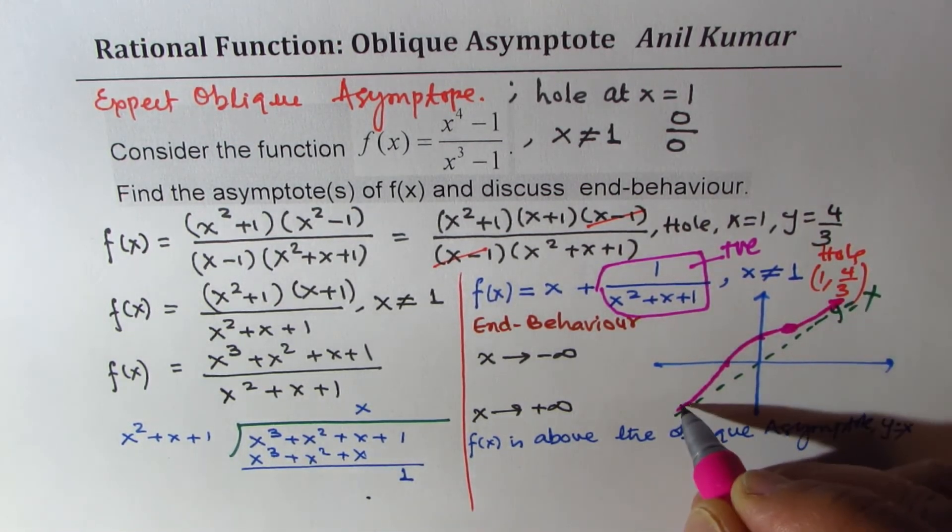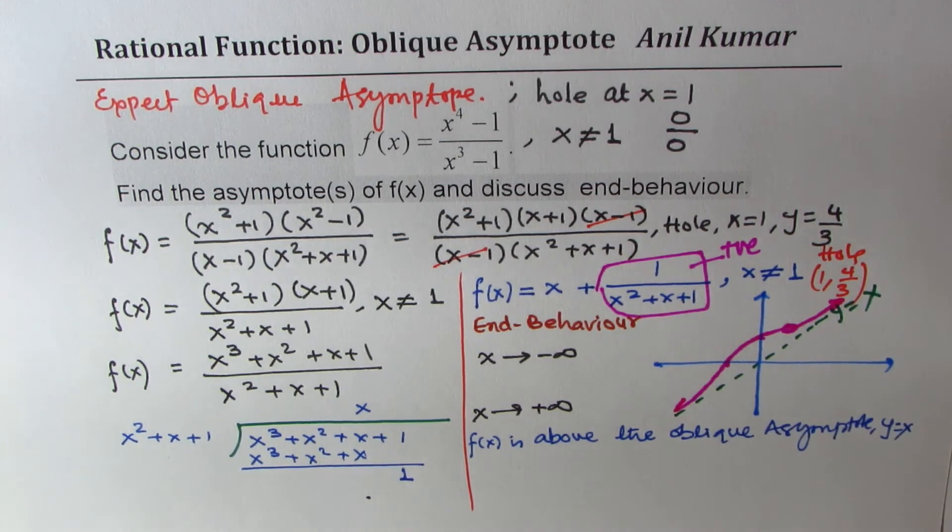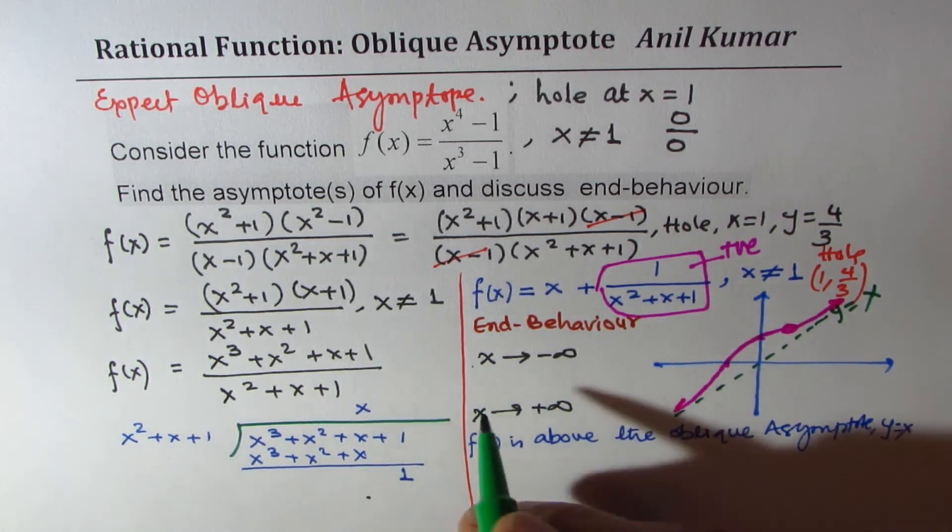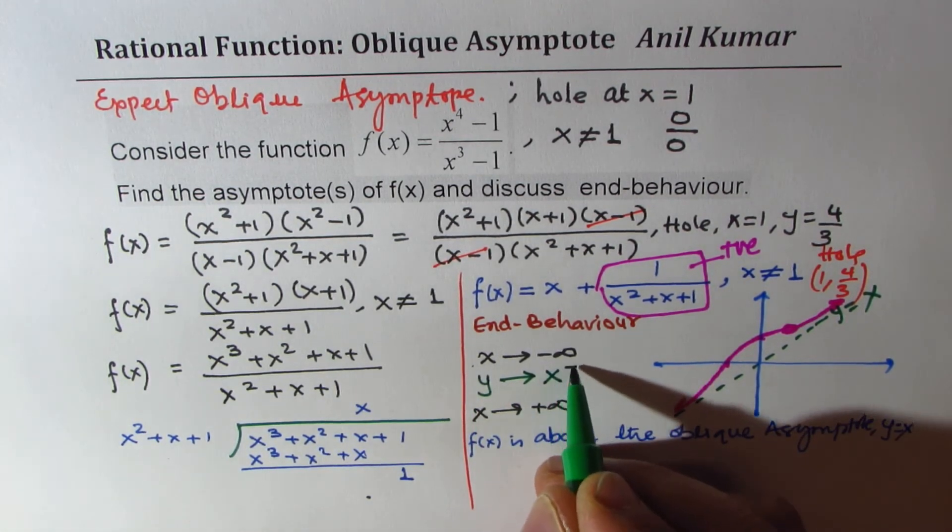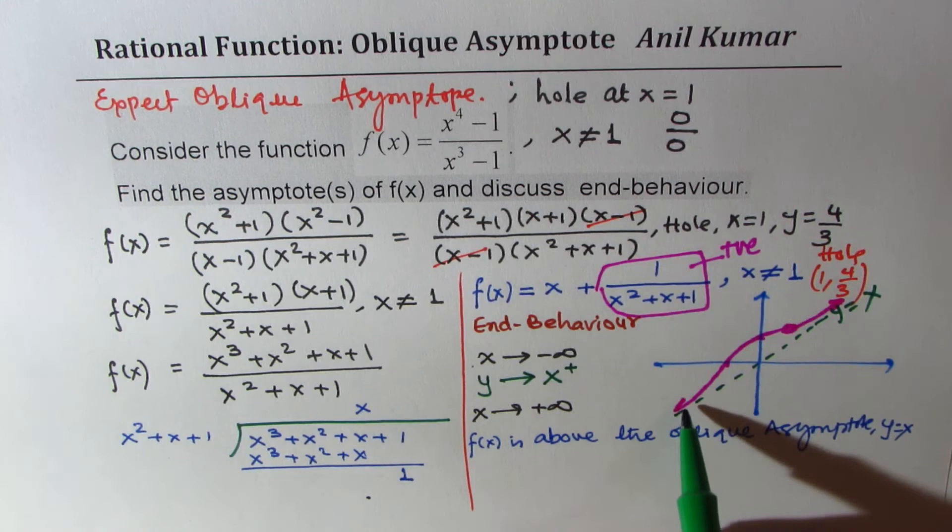So the answer here is, when x approaches negative infinity, y approaches x from above. This plus means from above.